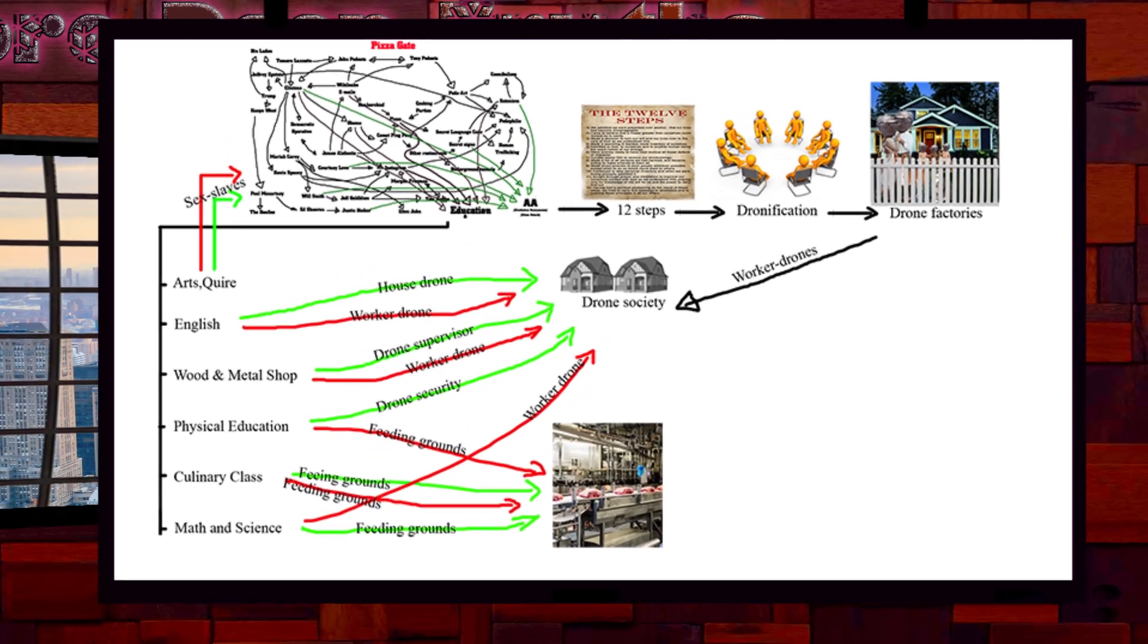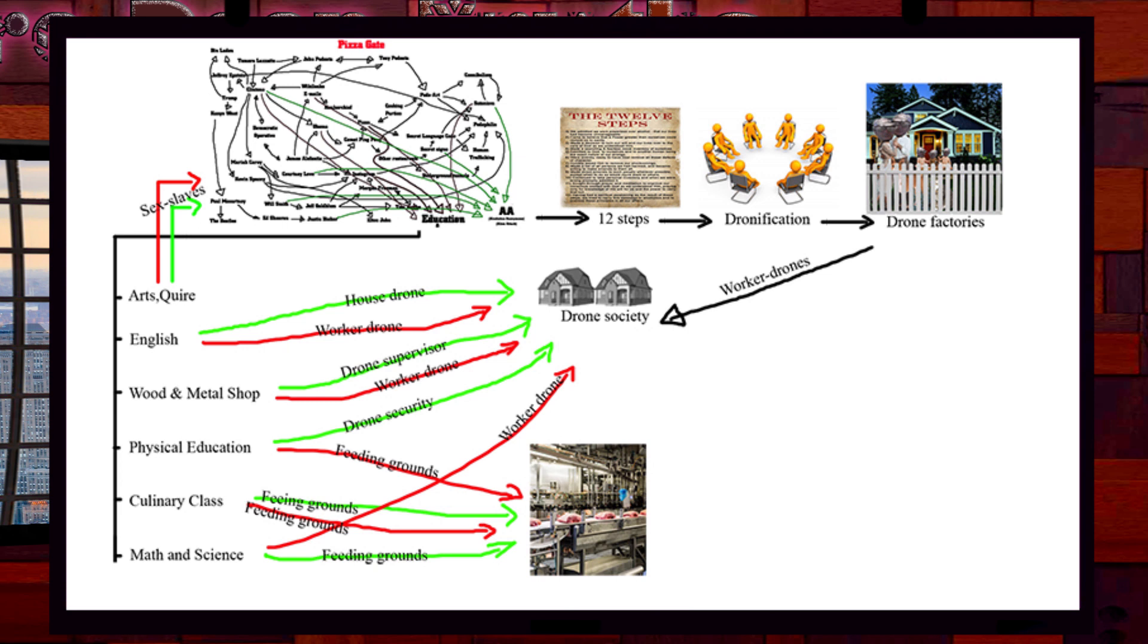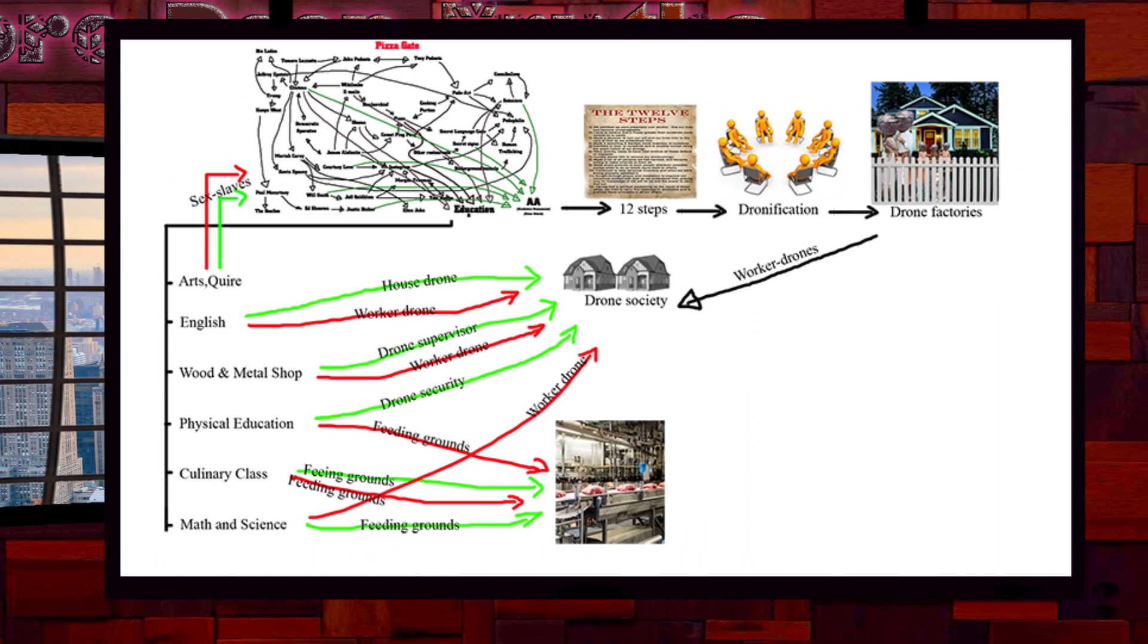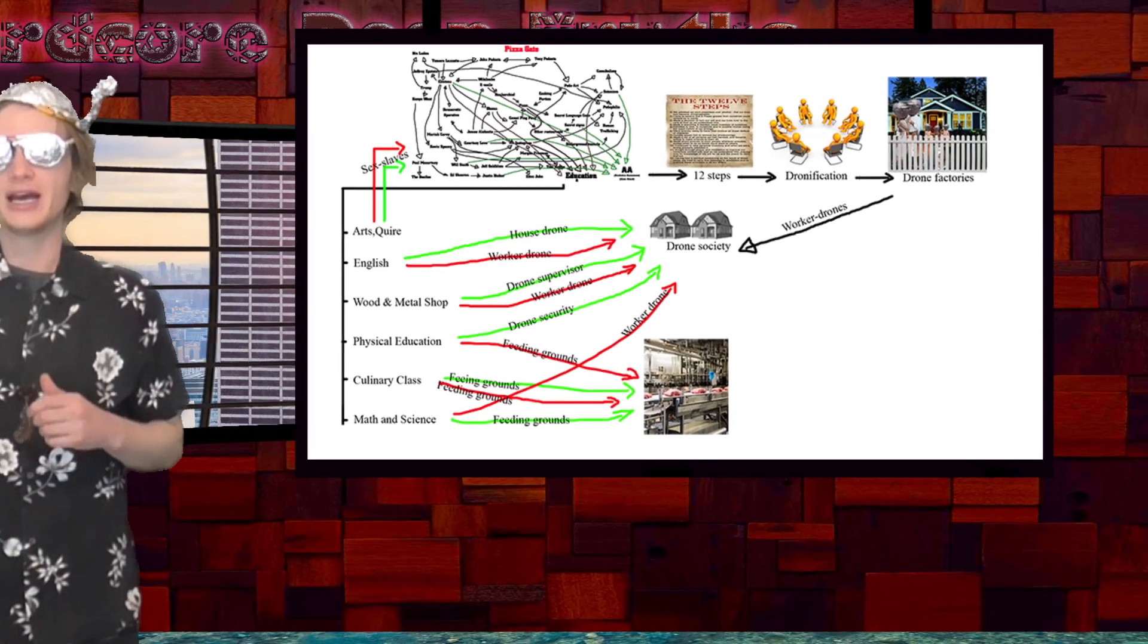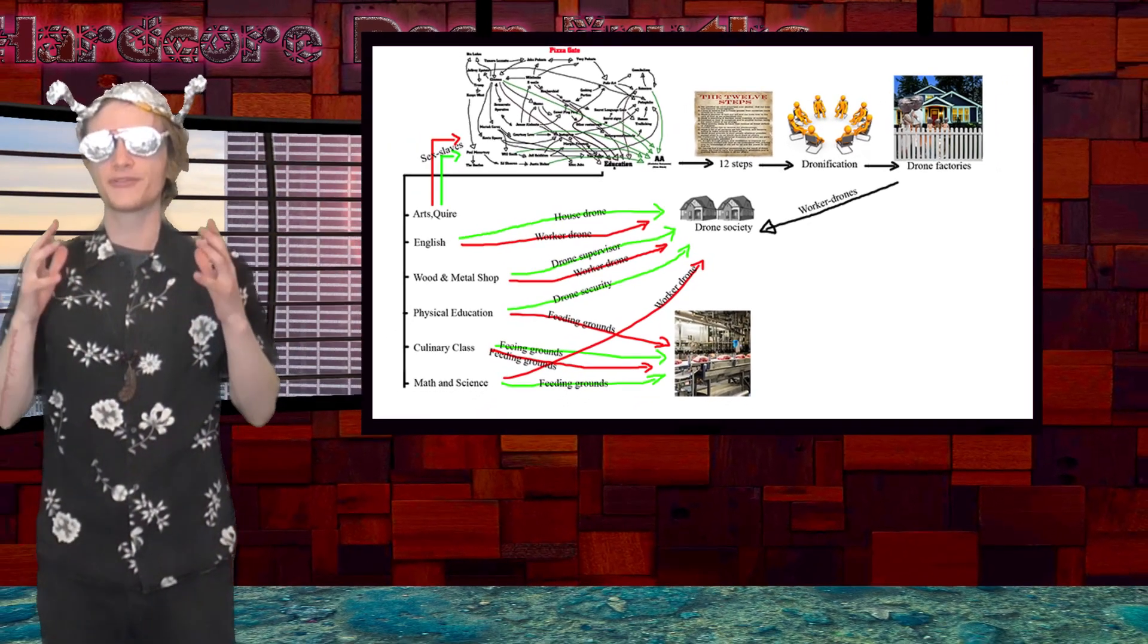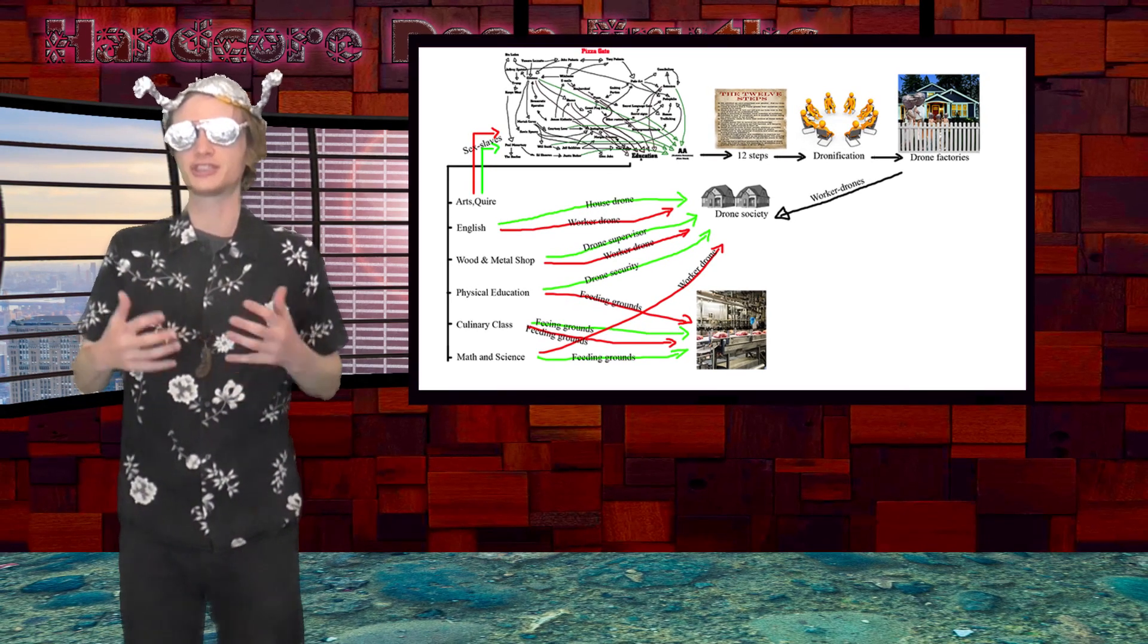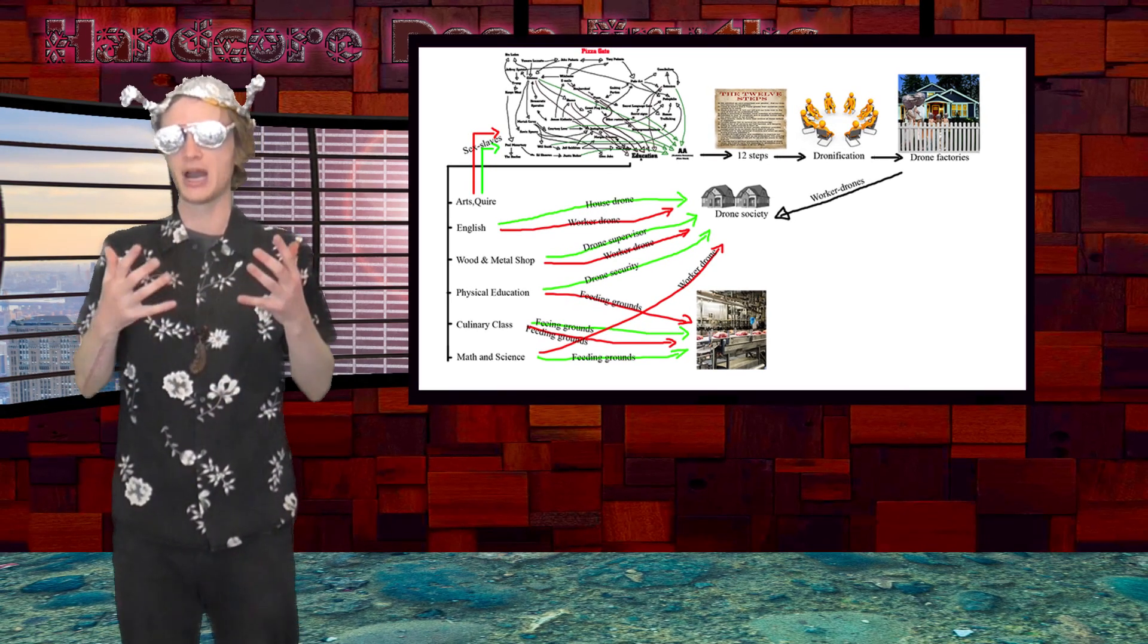The top gym students get to work security in the alien mines. We also have gym class as a distraction, an introduction to sports which brainwashes the population through subliminal messages. But more on that in season 5. Now, those at the bottom of the class, fat students and such, get sent to the feeding grounds.